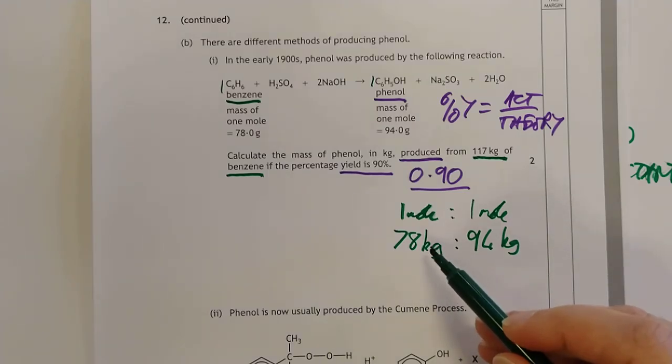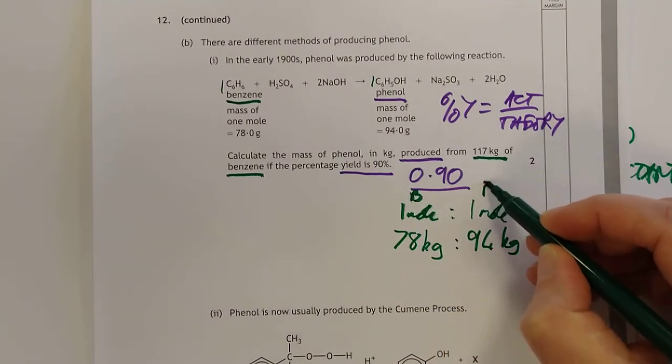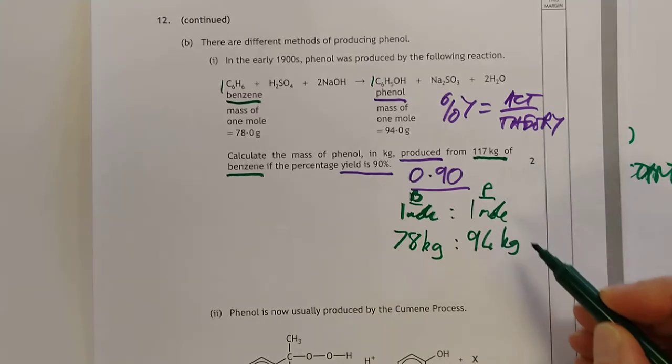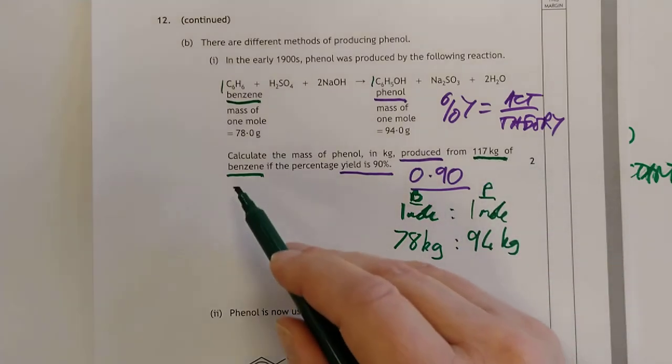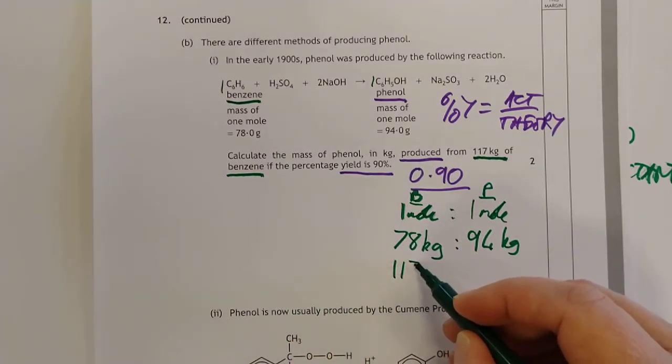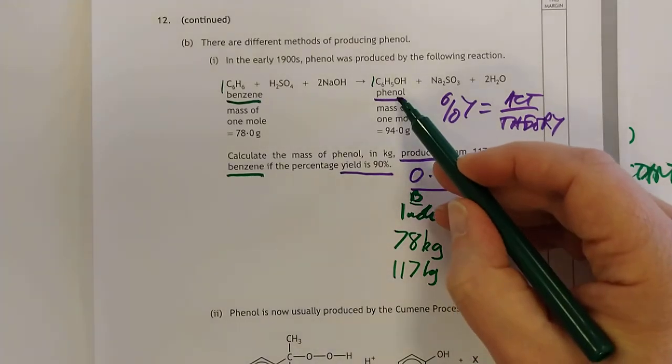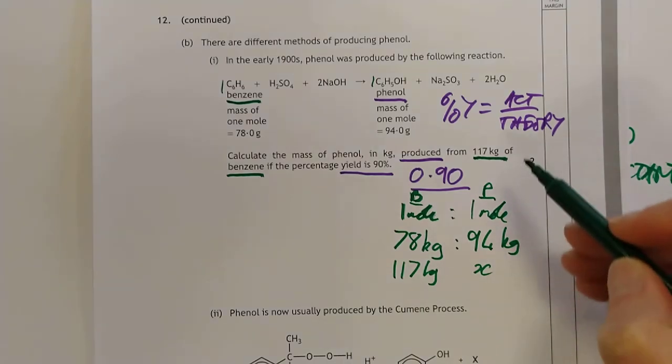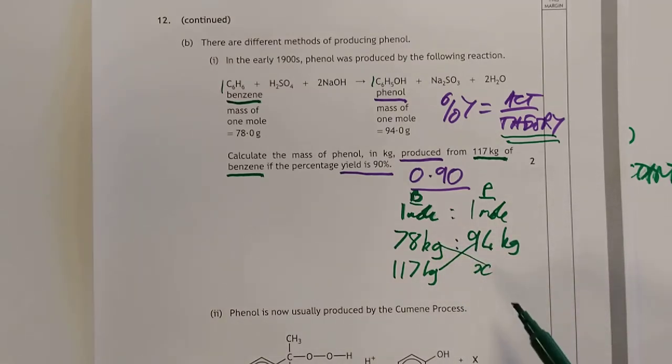So it's 1 mole to 1 mole, which even gives you the GFMs, 78 grams. Now at this point you're probably shouting, wait you can't do grams, it's in kilograms. That is very true. So you can do a maths dodge and just say that's fine. 78 kilograms would have produced 94 kilograms. All you're doing is multiplying both by 1000, still works. We had 117 kilograms of benzene so we'll put 117 kilograms in the benzene column and we'll put X in the phenol column because that's your product.